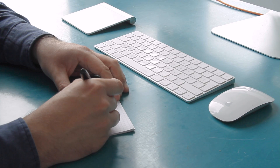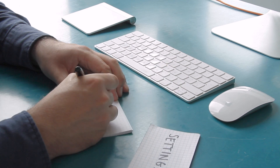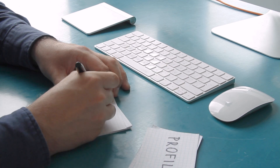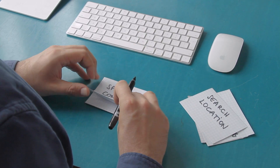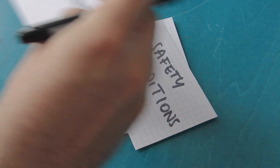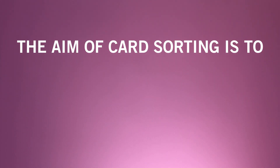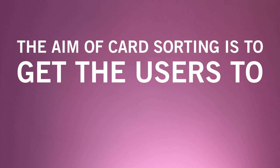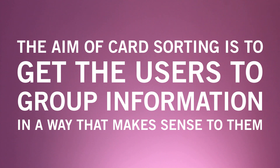So how does card sorting work? As the name suggests, card sorting is done using cards. First, you'll pick a set of topics based on the content you want to include on your website or app. You'll write a different topic on each card, shuffle the cards into a random order, and then hand them over to the user to sort into piles. The aim is to get users to group information in a way that makes sense to them.